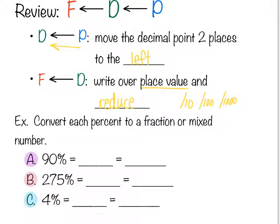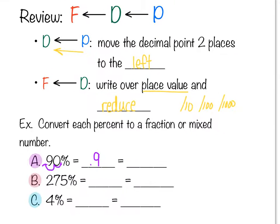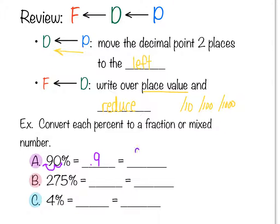To convert from percent to fraction, move the decimal backwards two places. For 90 percent, that becomes 0.9, and we write 9 over its place value, which is 10. That fraction doesn't need to be reduced.